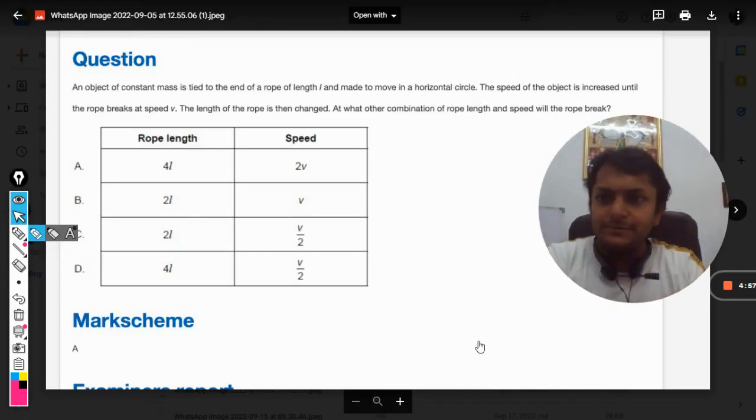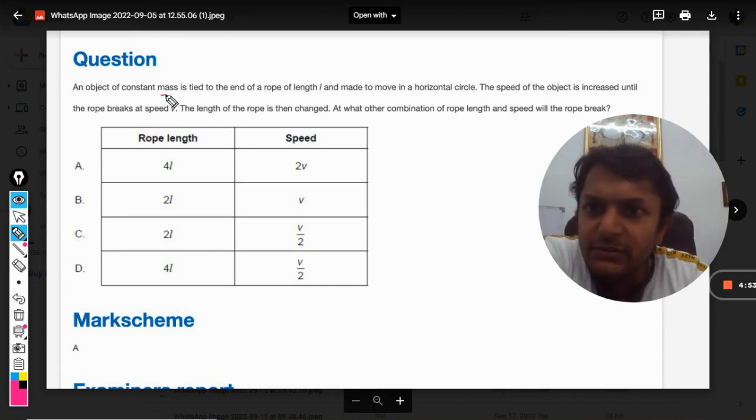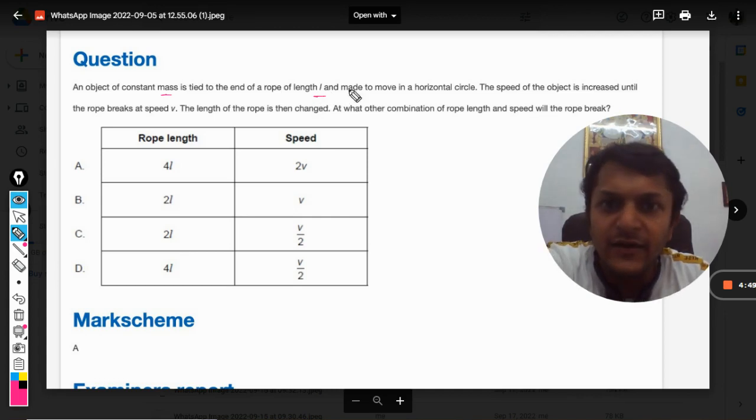Okay, dear students, let's start doing this question. An object of constant mass is tied to the end of a rope of length L and made to move in a horizontal circle. The speed of the object is increased until the rope breaks at speed V.